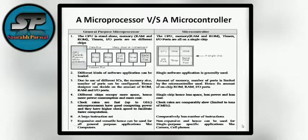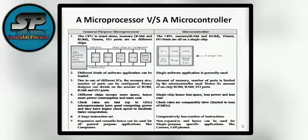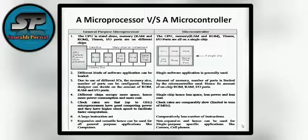Let's see the differences between a microprocessor and a microcontroller. In general-purpose microprocessors, the CPU is standalone and all the different components are on different chips, while in a microcontroller, all are on a single chip. Accordingly, different kinds of software applications can be loaded in a processor, while a single software application is generally used in a controller. Due to the use of different ICs, memory size, amount of ports, and amount of RAM can be decided by the designer. However, in a microcontroller, the amount of memory, number of ports, and on-chip memory is limited by the type of microcontroller used. In a microprocessor, different chips occupy more space, hence more power consumption and higher cost; whereas with a single chip, there is less space, less power, and less cost.